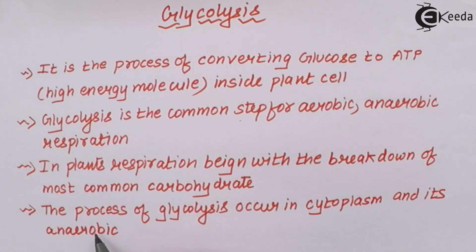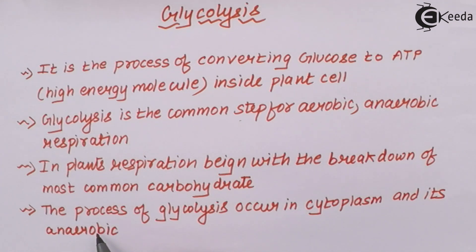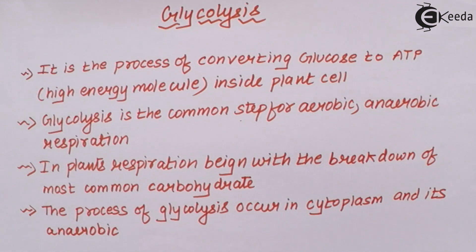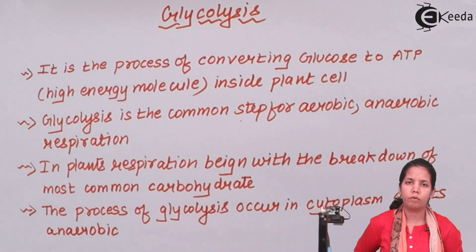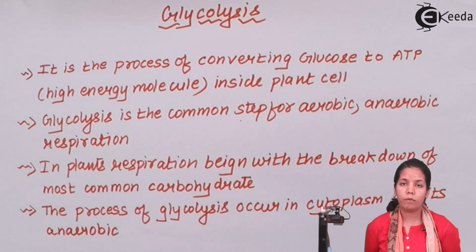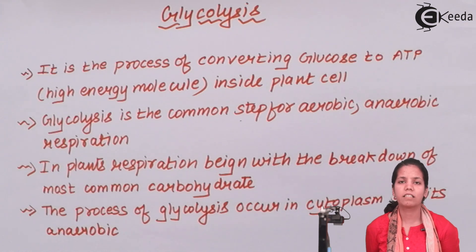Since glycolysis makes an energy-giving molecule (ATP), if it were dependent on oxygen, the plant would die in the absence of oxygen. With no ATP available, there is no energy for the plant to sustain itself and it would eventually die. That is the reason glycolysis is an anaerobic process.